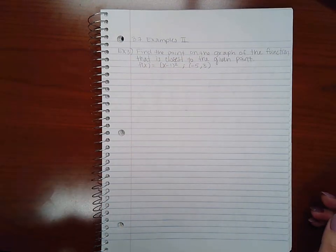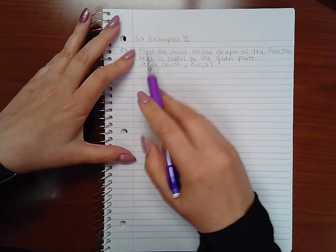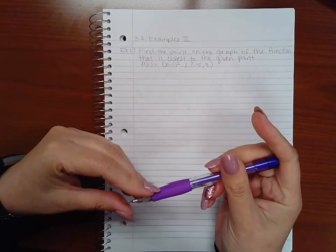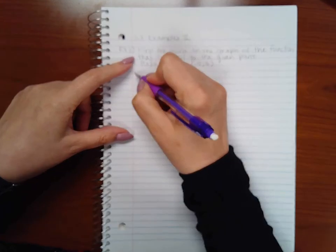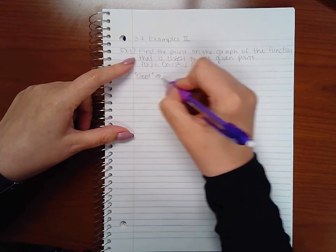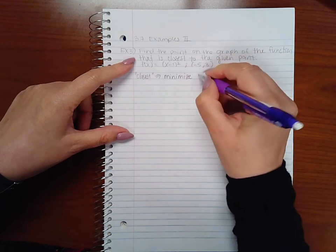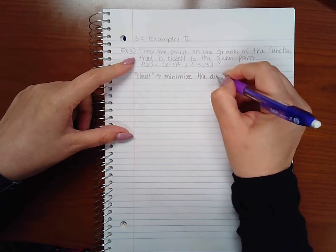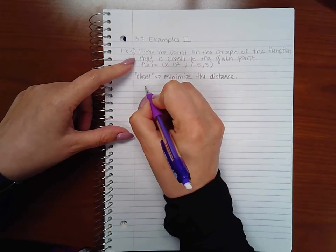In this video we will cover example 3 from section 3.7. In this problem it says find the point on the graph of the function that is closest to the given point. The word closest means we want to minimize the distance, which means our primary equation is going to be the distance formula.